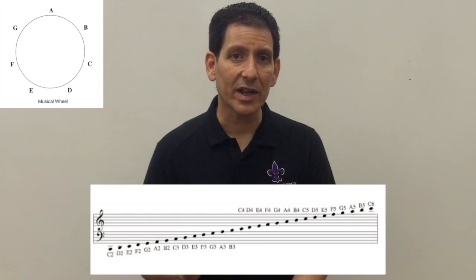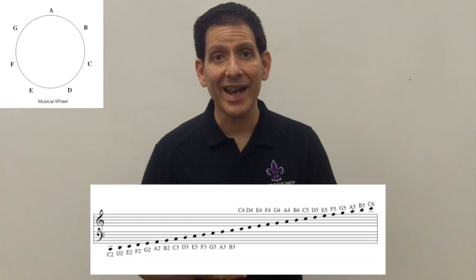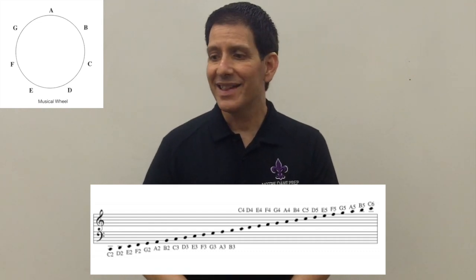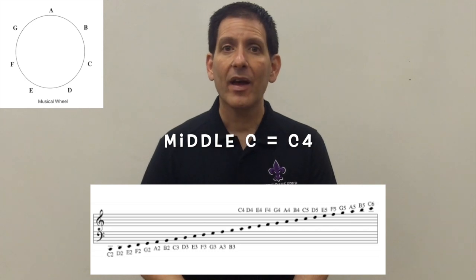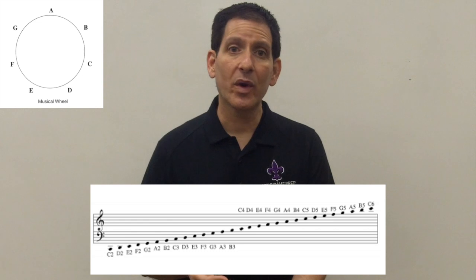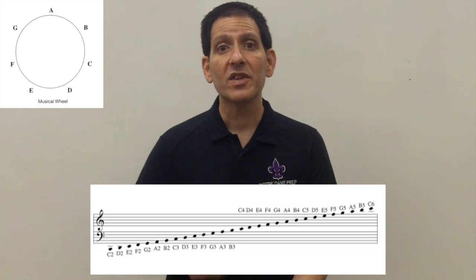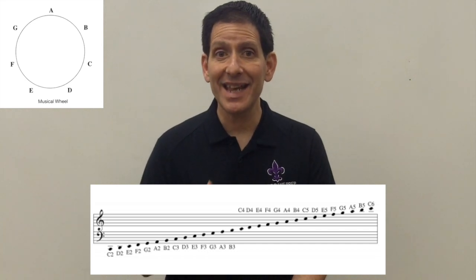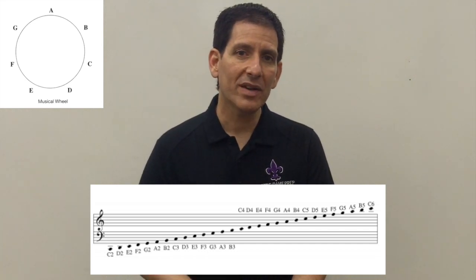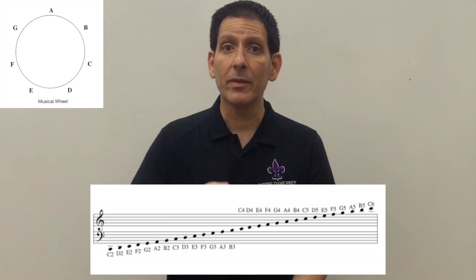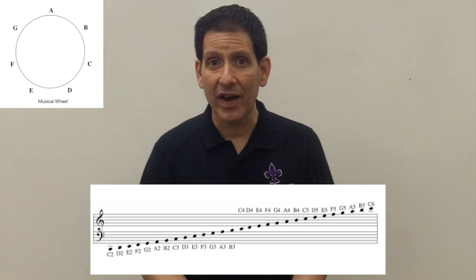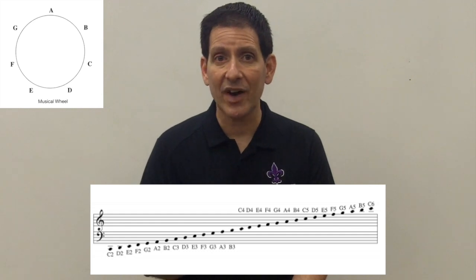The last thing we want to talk about is register. Register tells us specifically which C we are playing and which range those notes are going to be in. The easiest one to memorize is that middle C is C4. Every note above that C is in the range of four — so the D above middle C is D4, the E above that is E4 — and this continues until we reach the next octave. The C on the treble clef is C5, and all the notes up to the next C are in register five. The D above that is D5, the E at the top of the treble clef is E5, and so on.